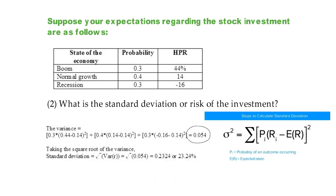Now, in order to get the standard deviation, you need to take your square root of variance, which is square root of 0.054, 23.24%. So, the risk of the investment is 23.24%.